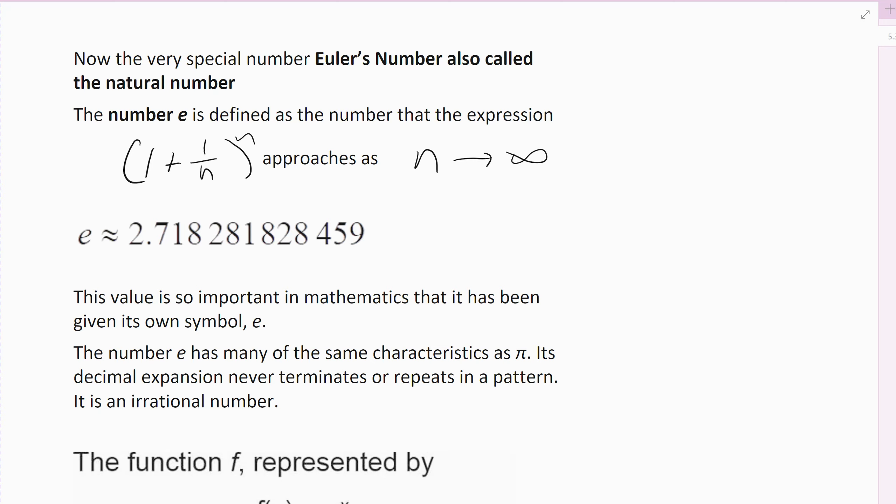It's also called, probably more commonly, the natural number. The reason why it's labeled E is because of Euler. Number E, it's a lot like pi, it's an irrational number.